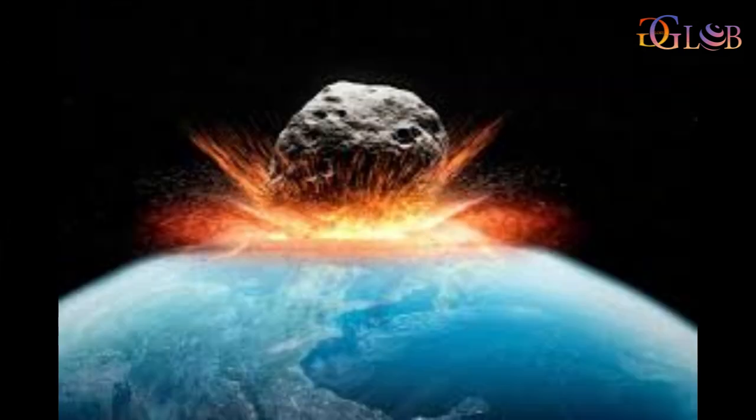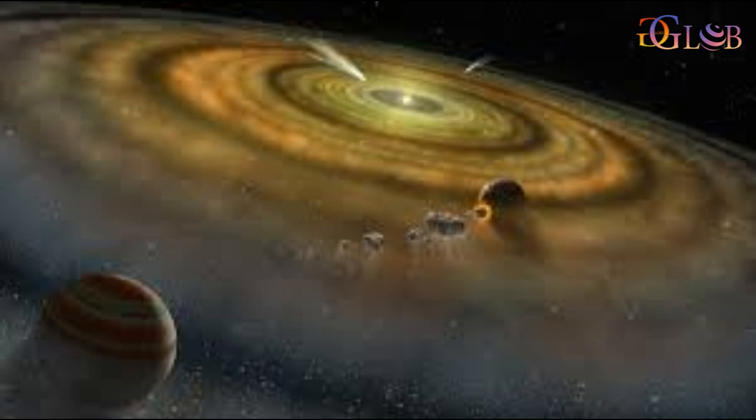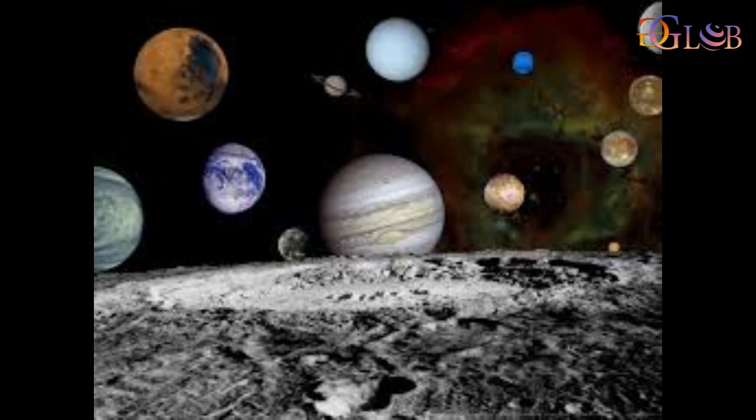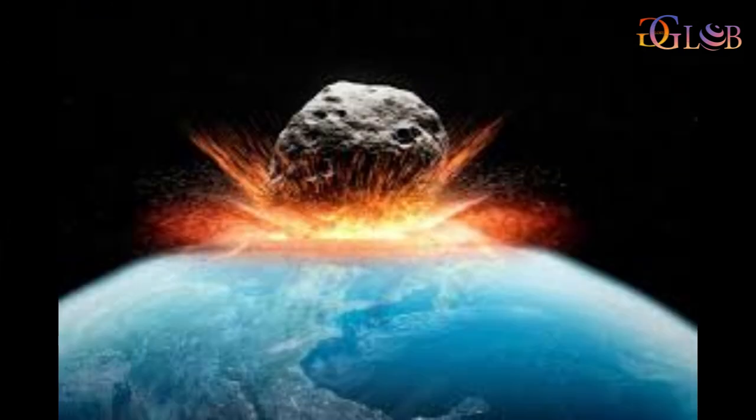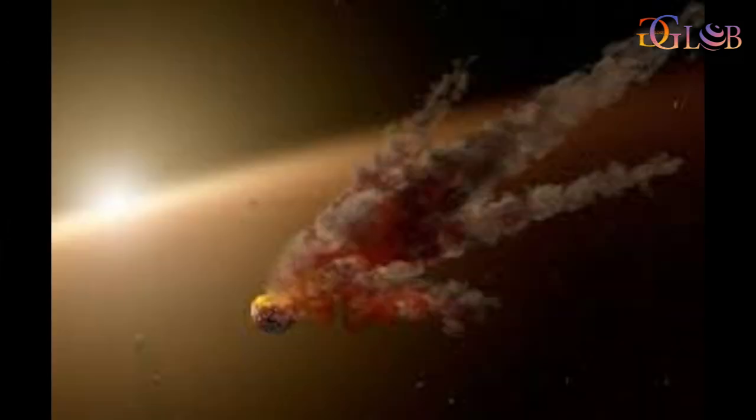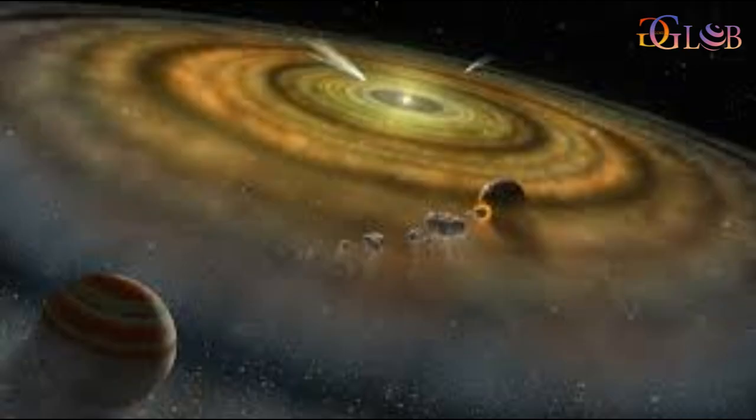Isotopes are different varieties of the same element which differ only in the weight of their atomic nucleus. Scientists assume that in the early solar system, these and other metal isotopes were not evenly distributed. Rather, their abundance depended on the distance from the sun. They therefore hold valuable information about where in the early solar system a certain body's building blocks originated. The precise isotope composition of Earth's accessible outer rock layers and that of various types of meteorites have been studied for some time.